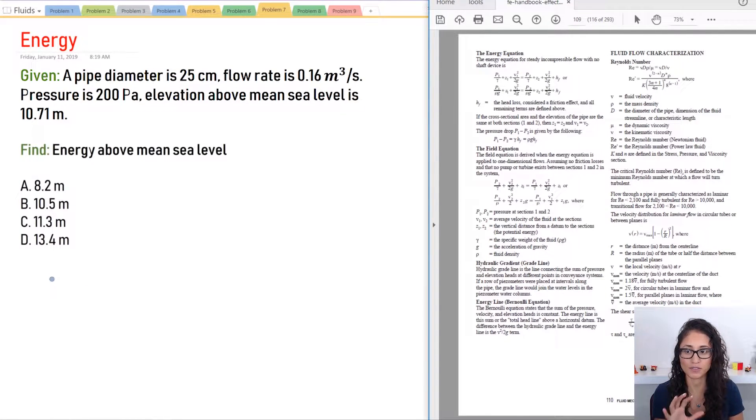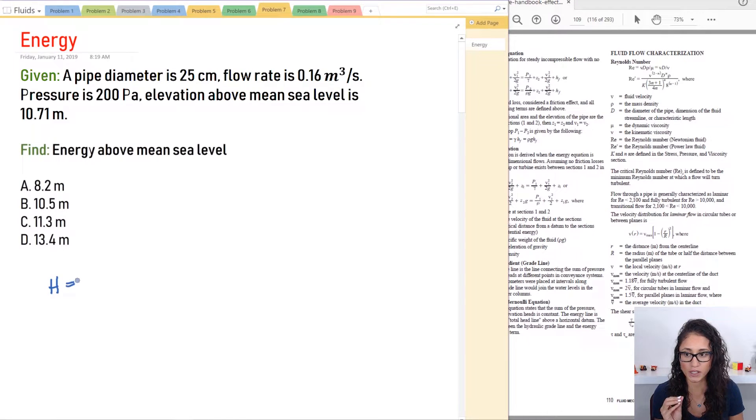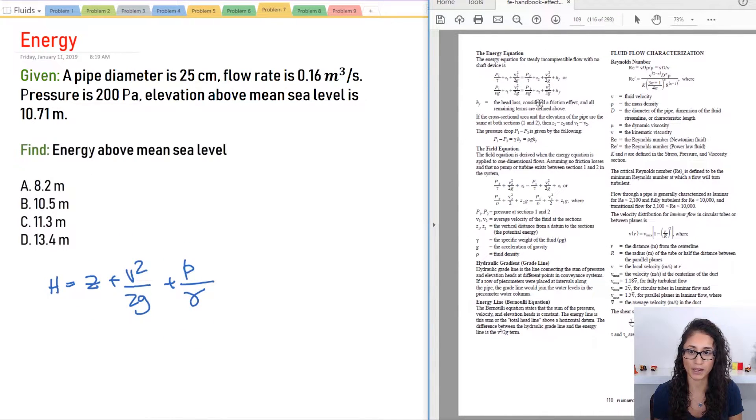Let's first identify the equation of the energy. So H is equal to Z plus V squared over 2G plus P over gamma. This is the energy equation. You also have it here on page 109.